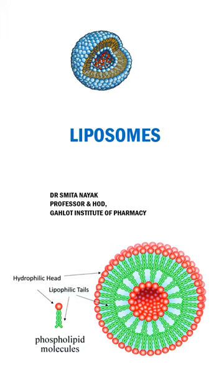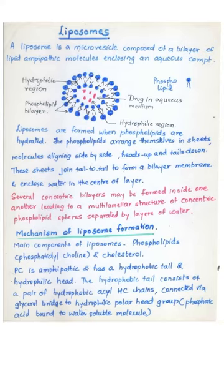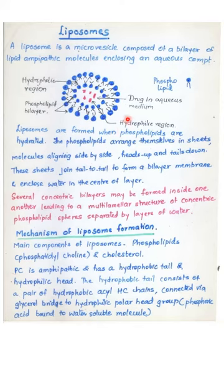In today's lecture, we will focus on the advantages and applications of liposomes, their methods of manufacture as well as their evaluation techniques. Let us now look at the structure of a liposome. A liposome is a microvesicle that is composed of a bilayer of lipid amphipathic molecules with an aqueous core. The diagrammatic representation of the liposome is shown here, where you can see the bilayer of the amphipathic molecule — in this case, a phospholipid — which is in the form of a sphere.